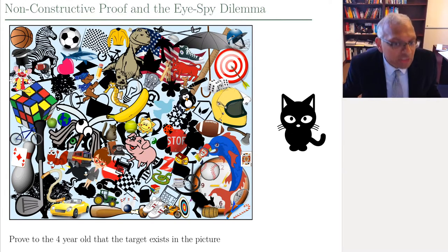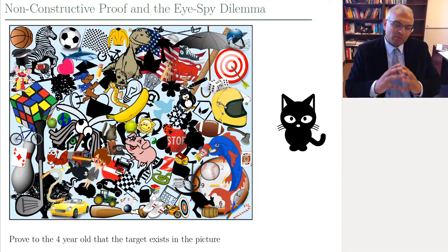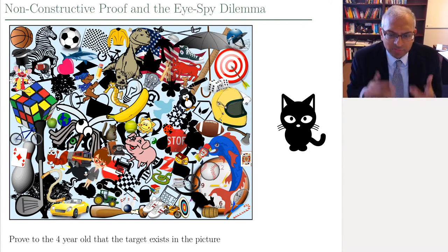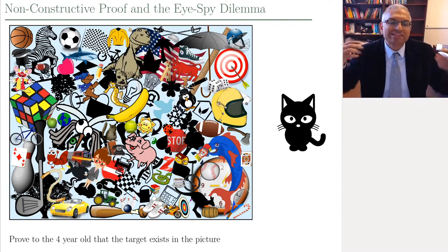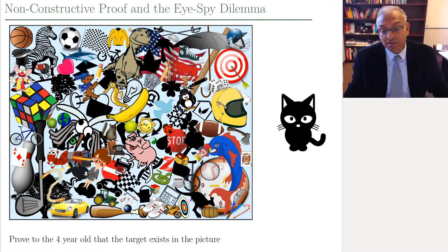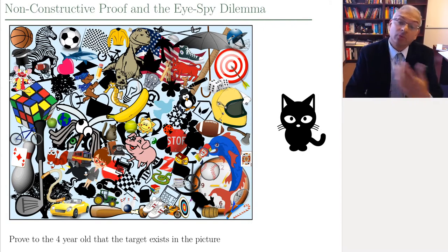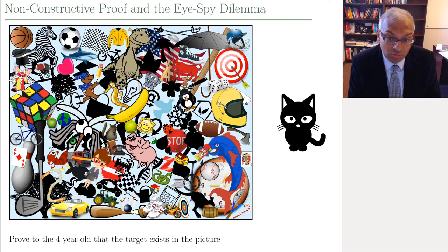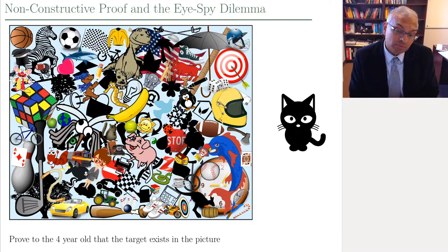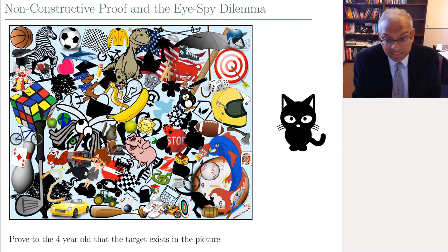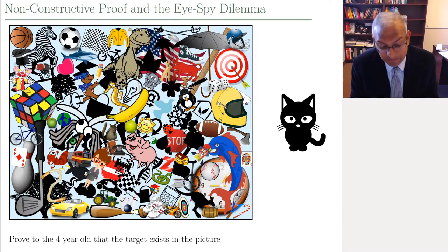We're going to talk about the pigeonhole principle, and one of the biggest uses of the pigeonhole principle is to show that something exists without in any way revealing or divulging exactly what or where that thing is.